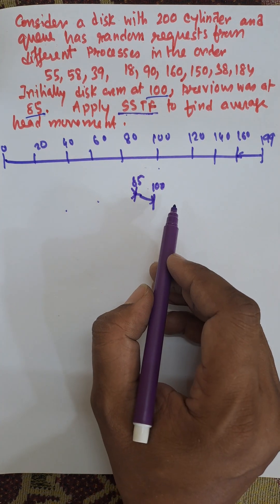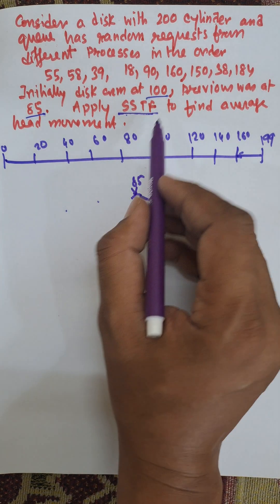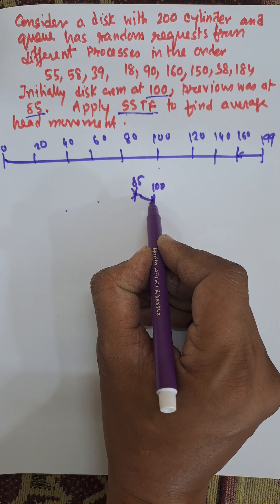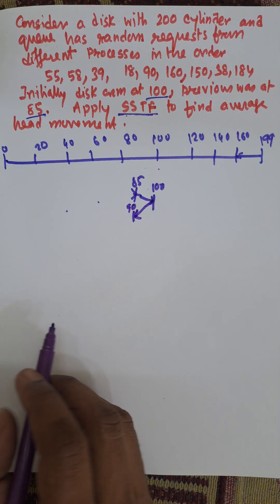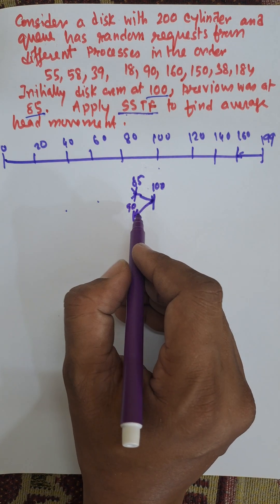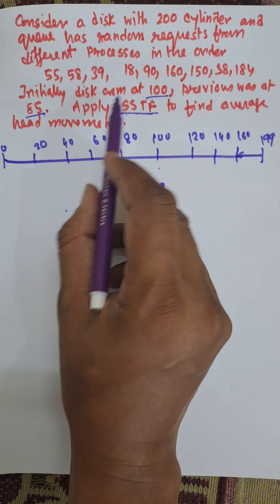From 100 we can move easily to 91 in the shortest distance. From that current location we can move to the next shortest distance, that is we can move to 58.